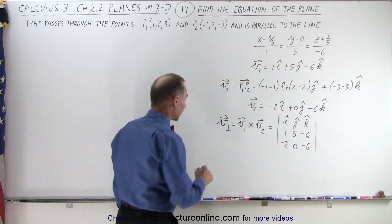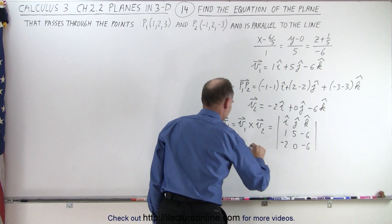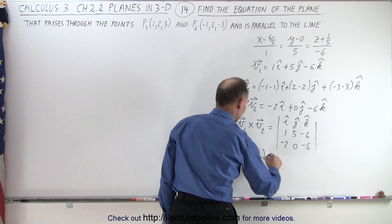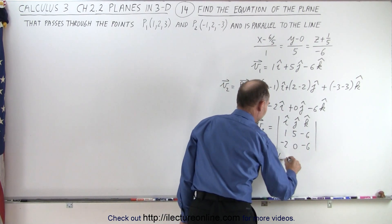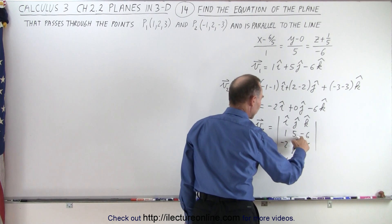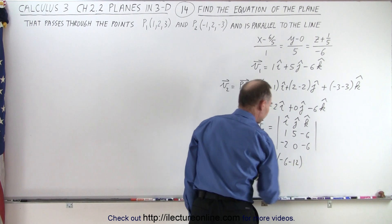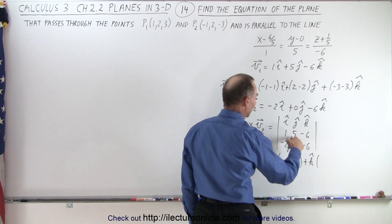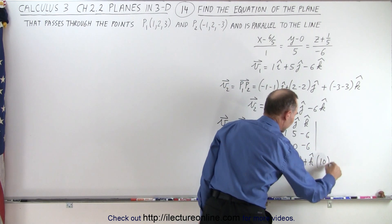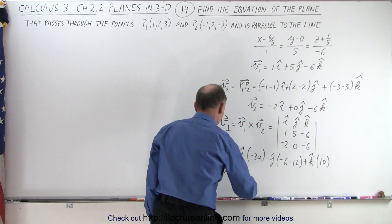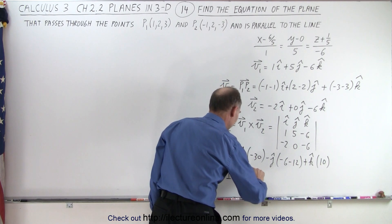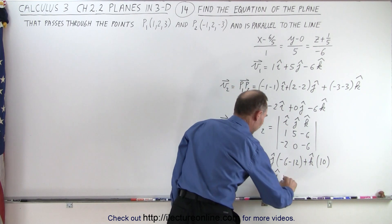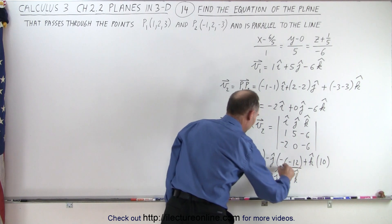Let's go ahead and see what the cross product is. This equals i times (5 × −6 = −30, and the other term is 0), minus j times (1 × −6 = −6, minus negative 2 × −6 = −12), and plus k times (1 × 0, minus negative 2 × 5 = positive 2). So the perpendicular vector to the plane is minus 30 in the i direction, plus 18 in the j direction, and plus 10 in the k direction. Now we have the perpendicular vector.